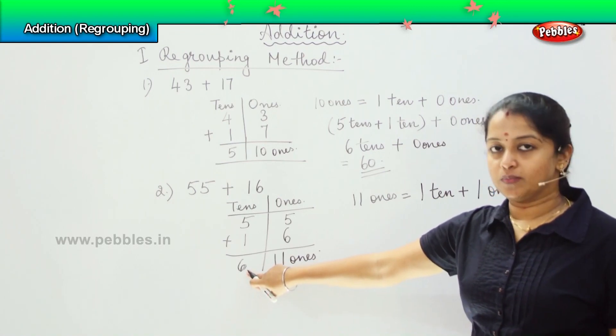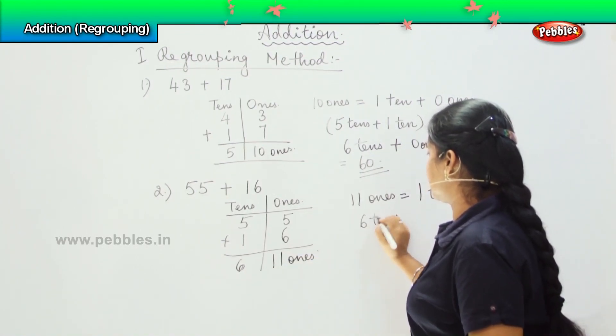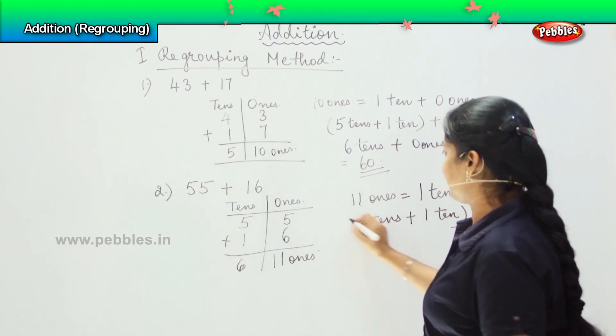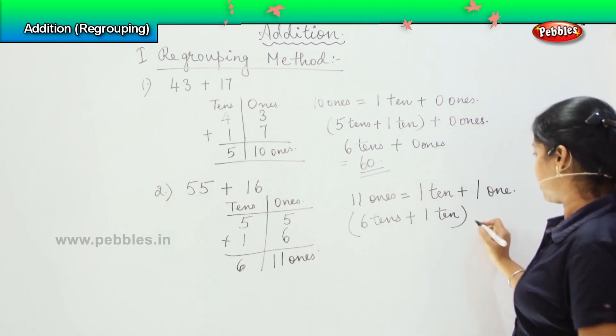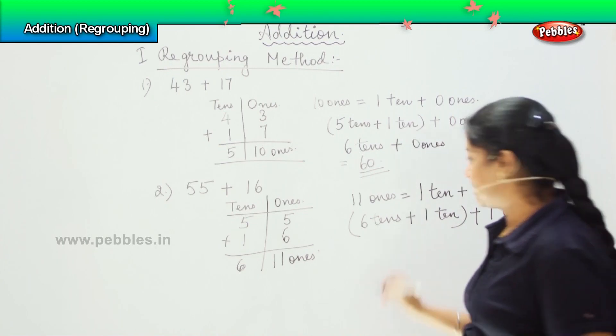And how many tens I have with me? I have 6 tens. So 6 tens plus 1 ten. I will regroup it in one column and then plus 1 one. 6 plus 1 is how much? 7.